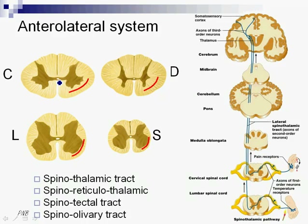The anterolateral system, as we said before, is formed by different tracts that are not easily discriminated one from another. First of all, the spinothalamic tract. The spinothalamic tract brings information of protopathic touch, pressure, thermic sensibility, and pain — nociception. It's all somatic information and not visceral information.